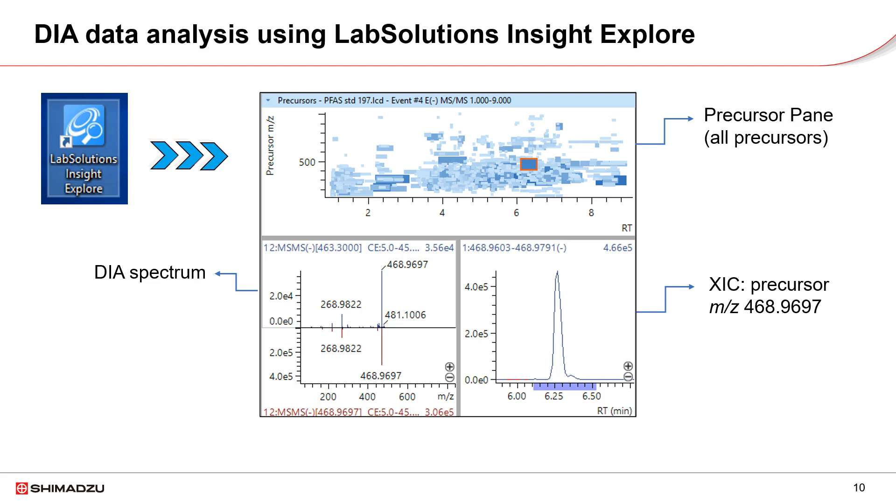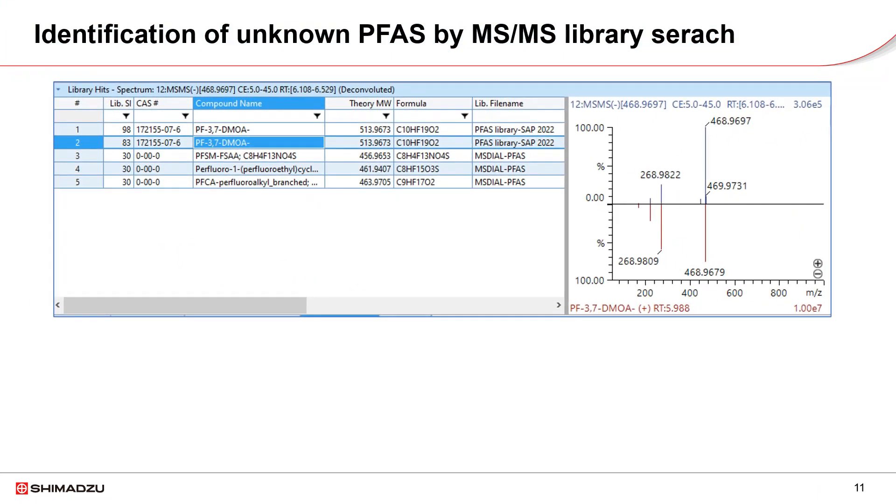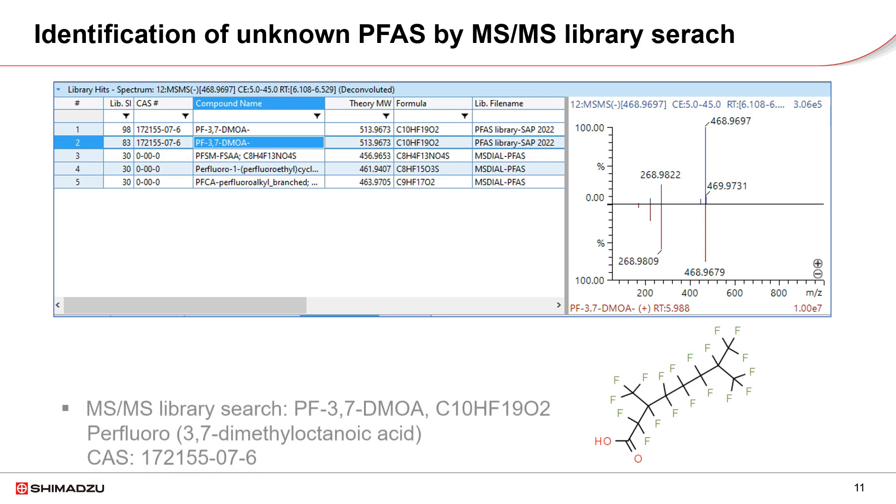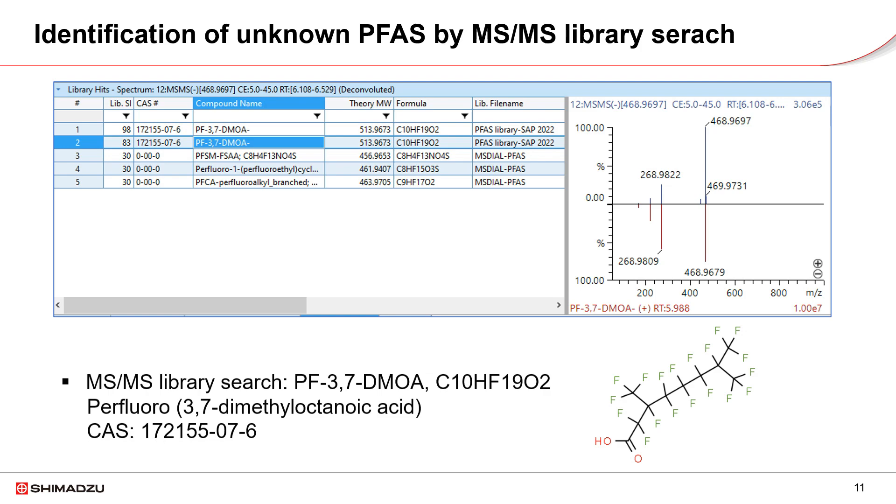Further identification of the compound can be carried out by MS-MS library search, formula predictor, database search and fragment annotation. Click on MS-Library search. The result shows that a PFAS, named as perfluoro-3,7-dimethyloctanoic acid is identified with high similarity index. The MS-MS library used are in-house high-resolution PFAS library and MS-Dial PFAS library.